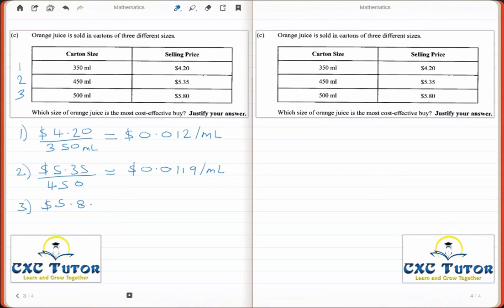Finally, the last juice costs us $5.80 and contains 500 milliliters. Therefore, you get an answer of $0.0116 per milliliter.